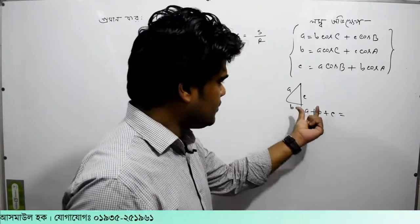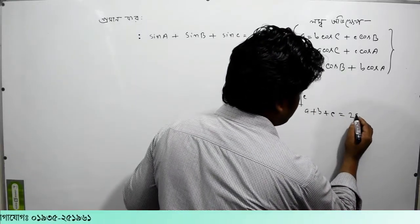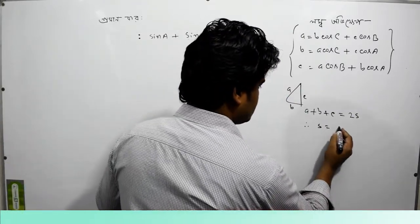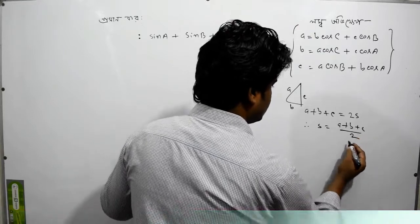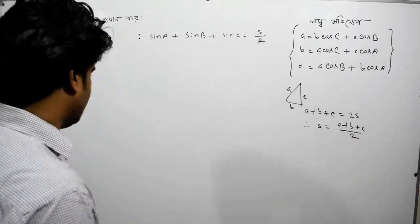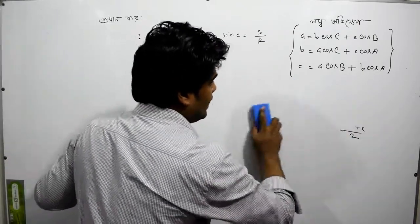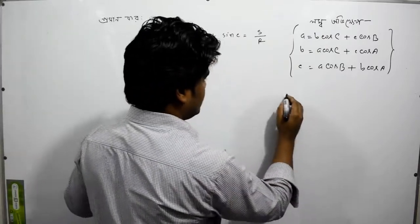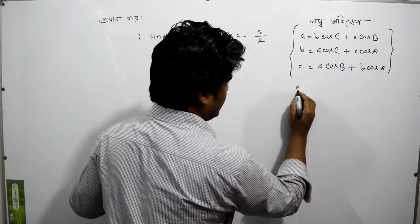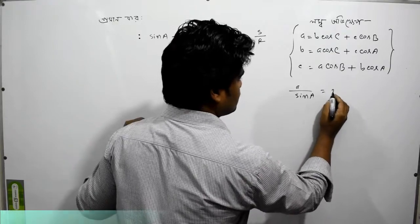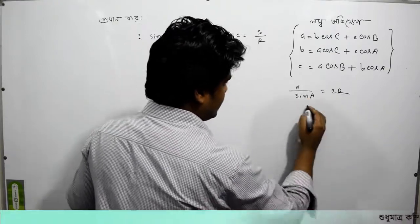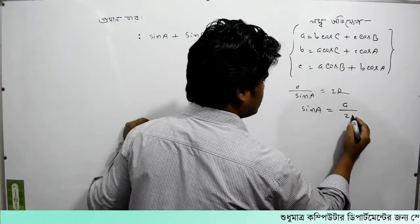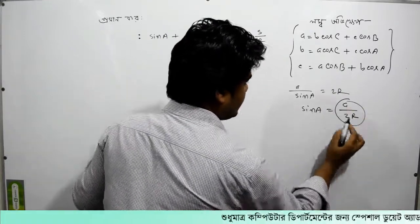A plus B plus C will be equal to 2S, and S is equal to 2S. We can see sin a by sin a equal to 2r. So we can see sin a equal to a by 2r.